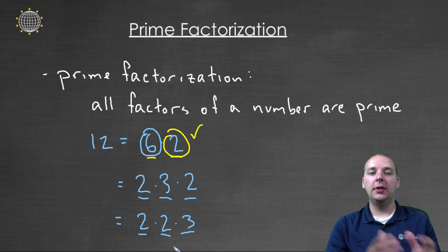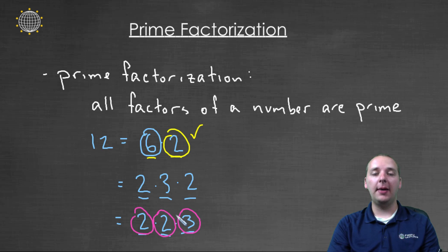But sure enough, two times three is six, and six times two gives you twelve. These can't be broken down any farther. The two, the two, and the three are all prime. So this is twelve's prime factorization.